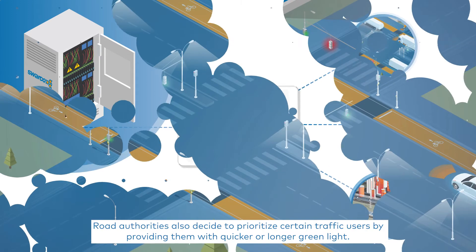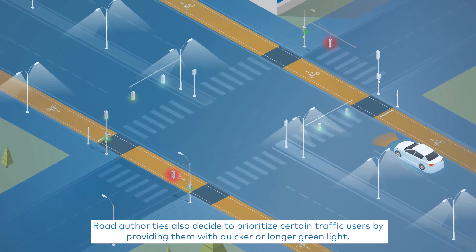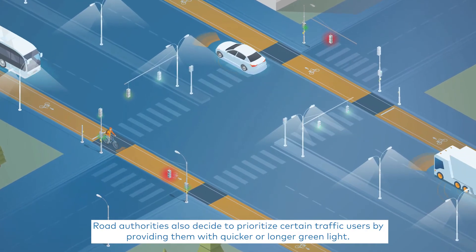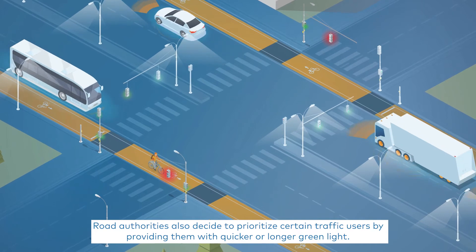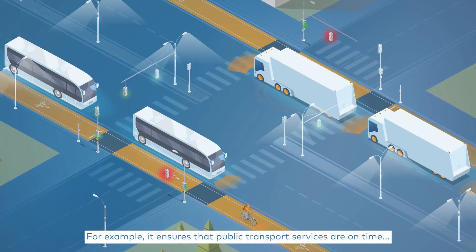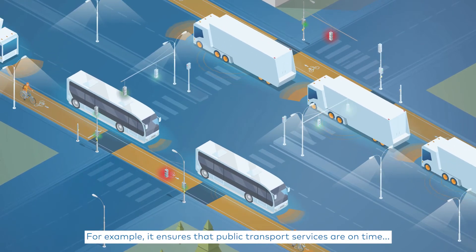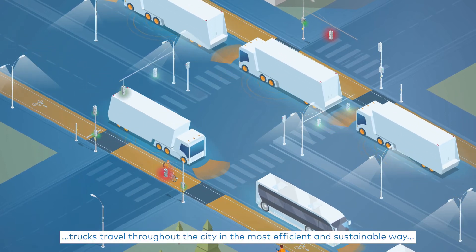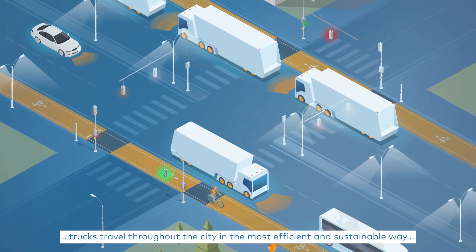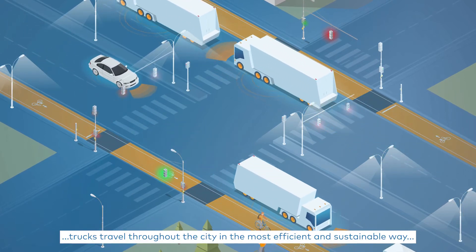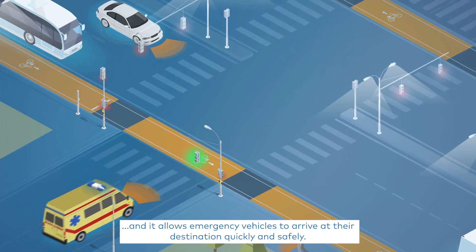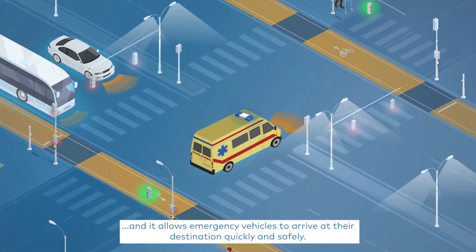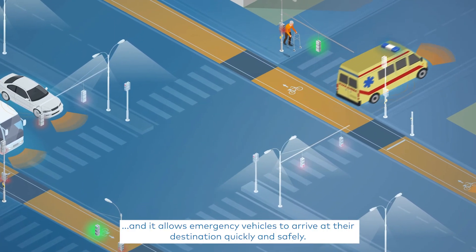Road authorities also decide to prioritize certain traffic users by providing them with quicker or longer green lights. For example, it ensures that public transport services are on time. Trucks travel throughout the city in the most efficient and sustainable way, and it allows emergency vehicles to arrive at their destination quickly and safely.